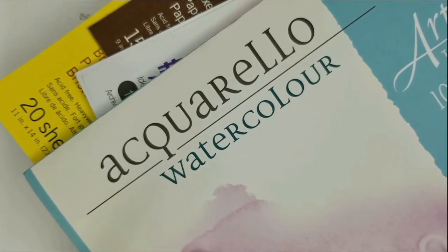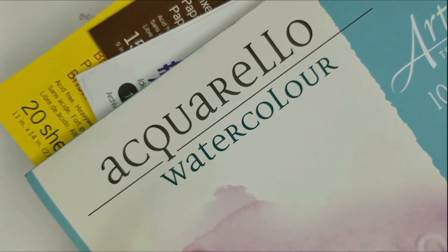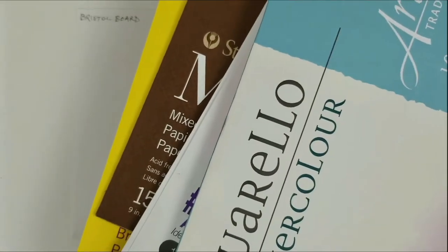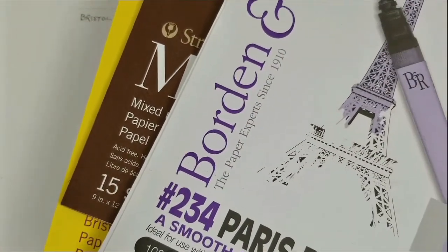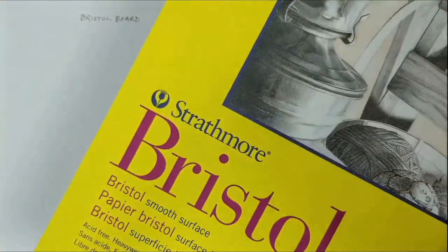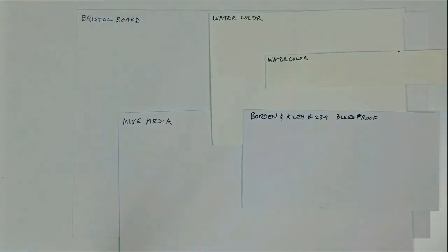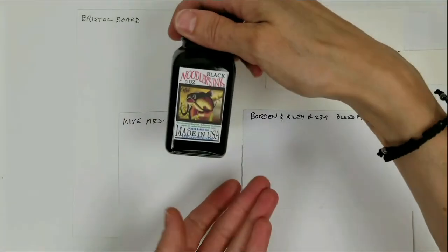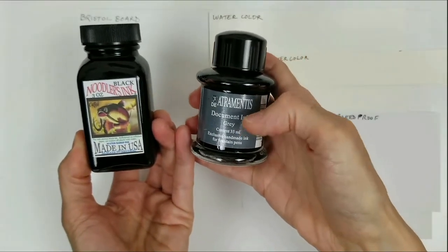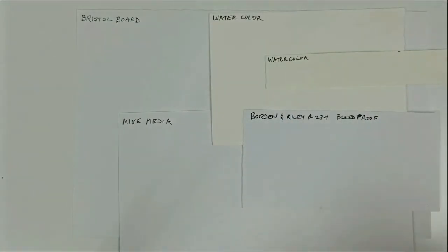For my demonstration of the differences between the Noodler's ink and the De Atramentis document ink I have a whole bunch of papers. I've got watercolor paper, marker bleed proof paper, all-purpose paper, mixed media all-purpose paper and actually also some Bristol board. So as you can see I have little swatches of these papers all set to go. I've got the two inks here, the Noodler's and the De Atramentis document ink, this is actually grey, which is almost black, and I have two dip pens.